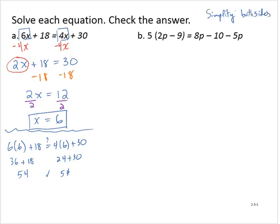On the left-hand side, I can apply the distributive property: 5 times 2p gives 10p, minus 5 times 9 gives 45. On the right-hand side, I have some like terms — 8p and minus 5p — so that simplifies to 3p minus 10.